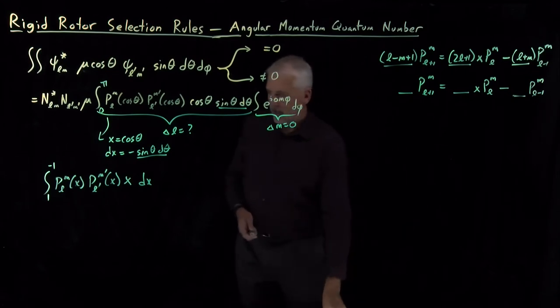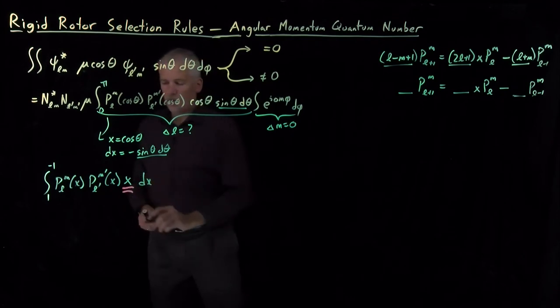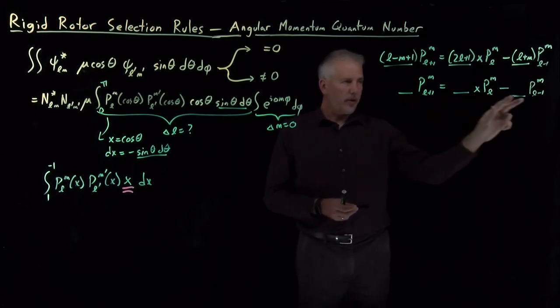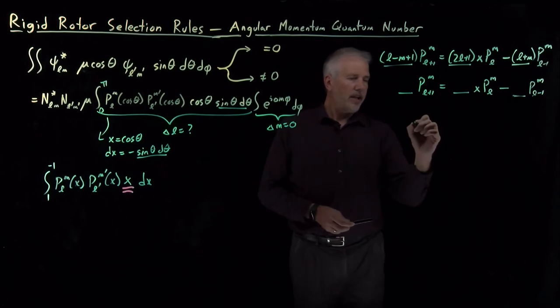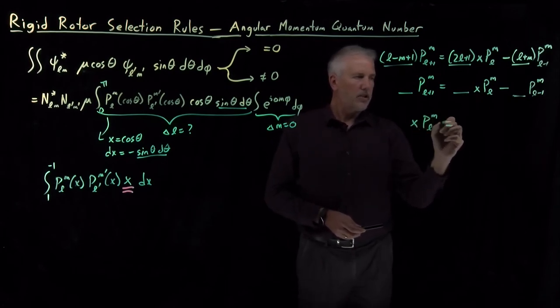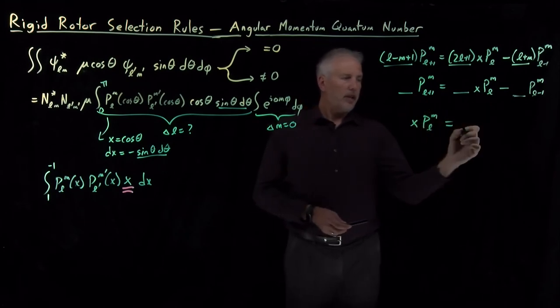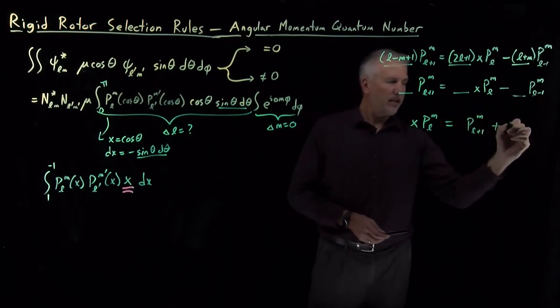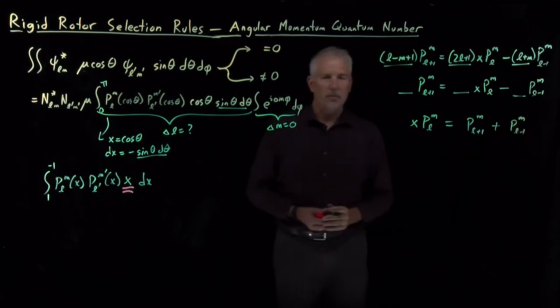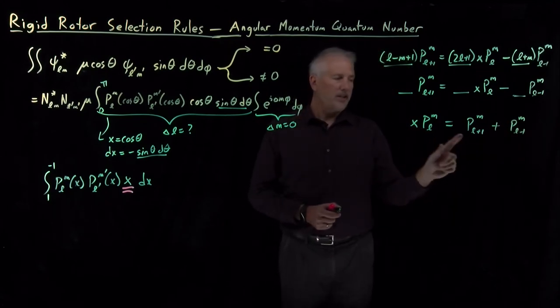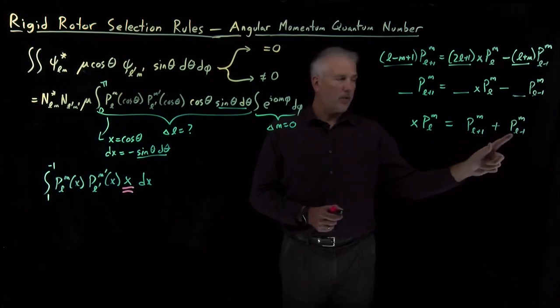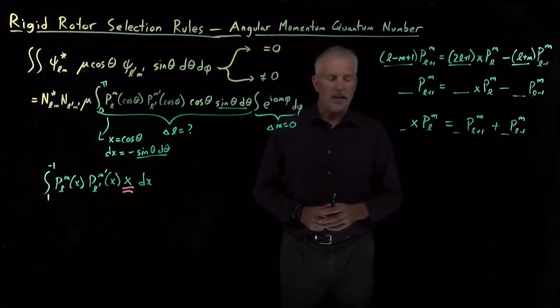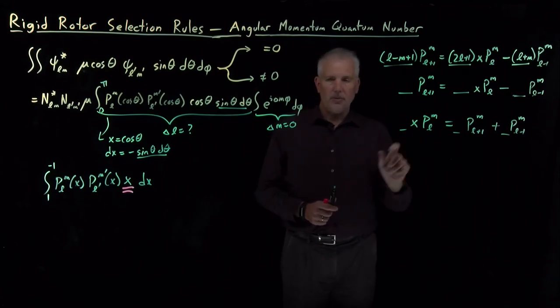The next step is to recognize that since I have an X in this integral, an X times one of these Legendre polynomials looks like this X times the Legendre polynomial. So if I rearrange this equation a little bit, I can see that X times the Lth Legendre polynomial is equal to the L plus 1, and if I bring this L minus 1 over to the other side, I'm adding the L minus 1 Legendre polynomial. So X times the Legendre polynomial is some combination of the one above it with L plus 1 and the one below it with L minus 1. Again, remembering there's some constants out front that I'm not bothering to write down.